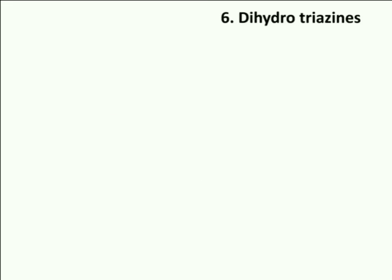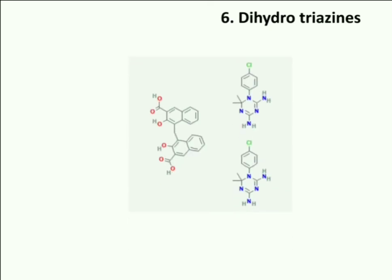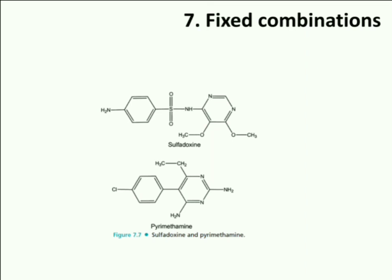The next category is dihydrotriazines, which include cycloguanil pamoate. The seventh category is fixed combinations. Combination therapy with antimalarial drugs is the simultaneous use of two or more antimalarial drugs at a time. Antimalarial combinations can increase efficacy and also shorten the duration of treatment. A few fixed combinations are sulfadoxine with pyrimethamine, and atovaquone with proguanil.